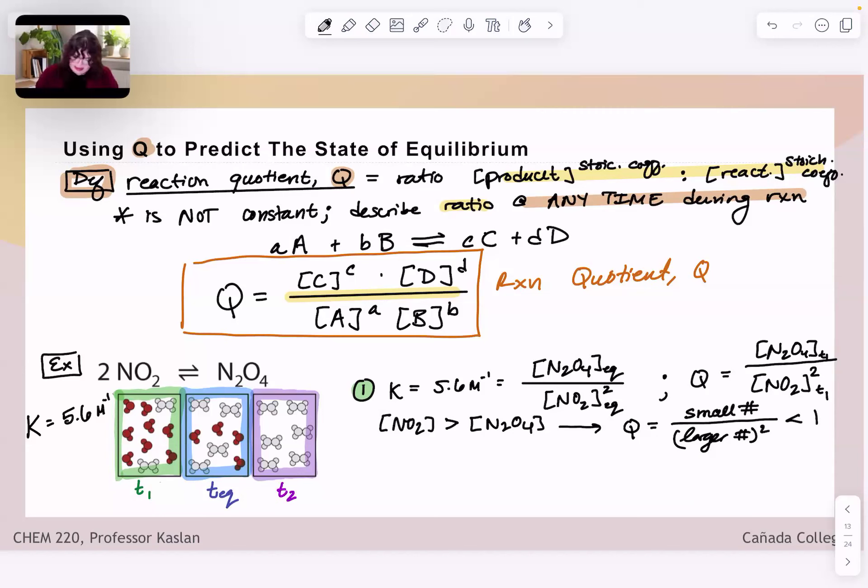And how does this compare to K? Well, K is equal to 5.6, whereas Q at this reaction time condition 1 we know is going to be less than 1 or specifically less than K because K itself is certainly over 1. It's 5.6.